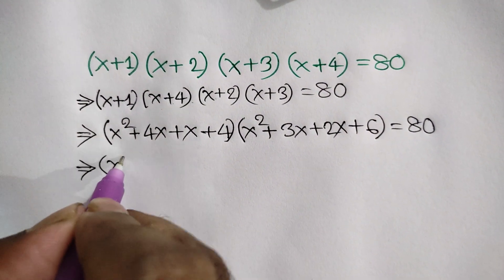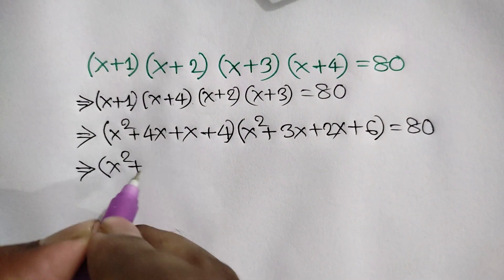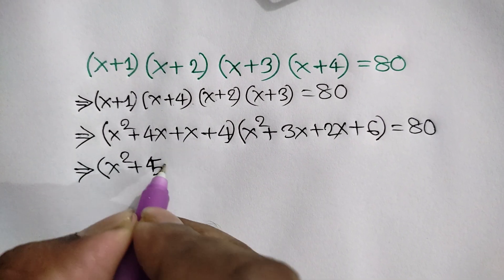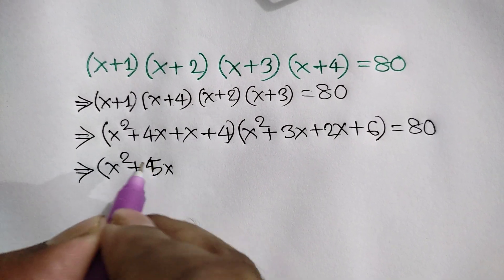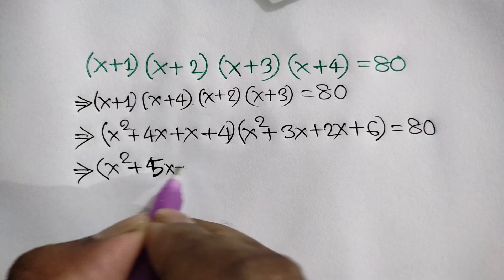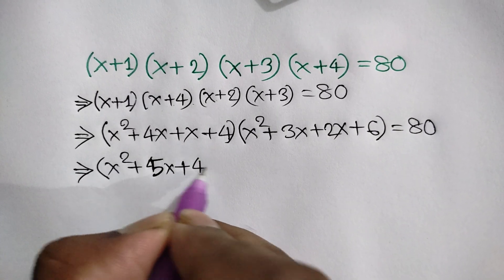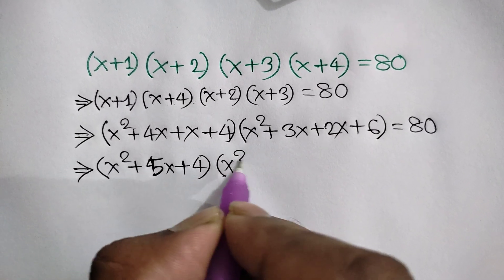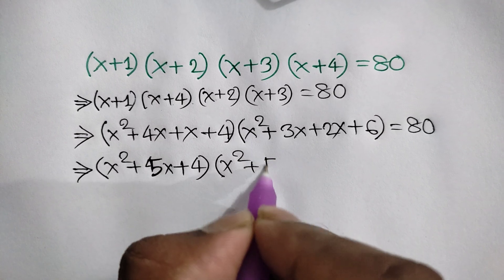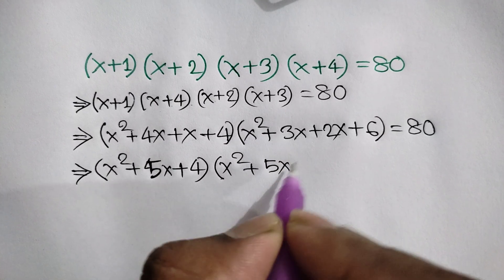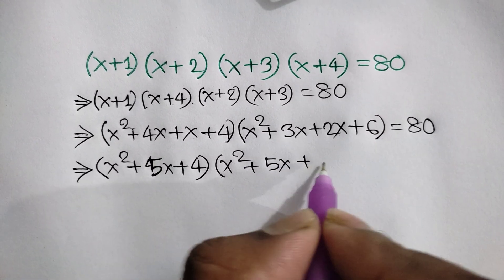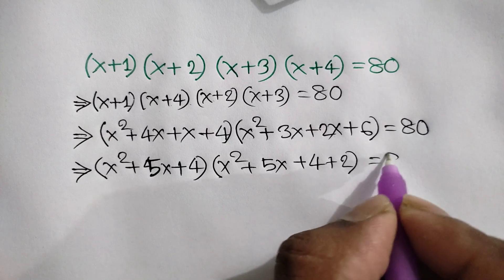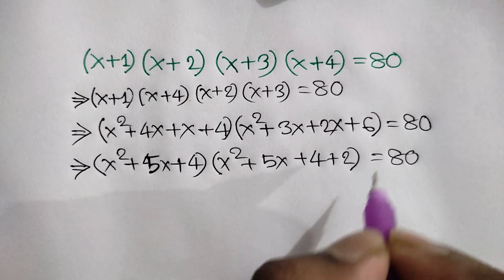Simplifying: x² + 4x + x is x² + 5x + 4, and x² + 3x + 2x + 6 is x² + 5x + 6, which we can write as x² + 5x + 4 plus 2, is equal to 80.